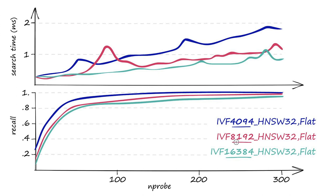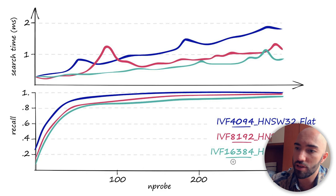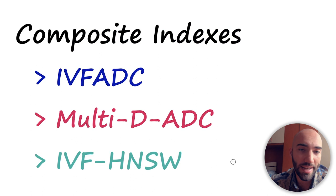Looking at performance charts comparing different numbers of cells: the optimized part is the IVF centroid search, so increasing the number of cells decreases search time but also decreases recall slightly. You can increase the number of IVF cells to improve search speed if needed. That covers all three indexes: IVF ADC, Multi-D ADC, and IVF HNSW. With these you can build some pretty cool indexes. Thanks for watching and I'll see you in the next one.